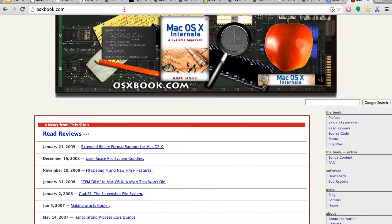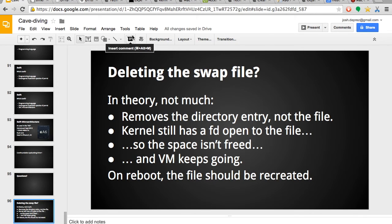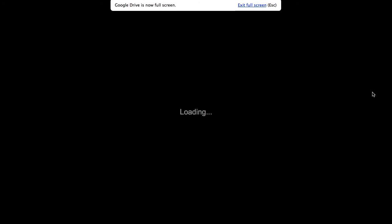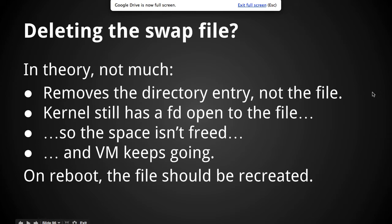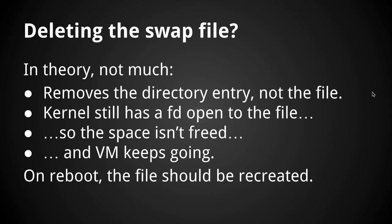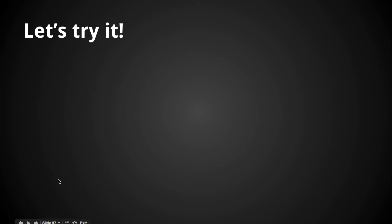One thing I vaguely hinted at in my abstract: what happens if you delete the swap file on a running system? Well, if you do it with rm, not much — it just deletes the directory entry. The kernel still has a file descriptor to it, so you haven't stopped the kernel running. The space isn't freed because the kernel still owns it. The virtual memory system keeps going, nothing happens, and when you reboot, it just comes back. So given that's the theory, let's try it — I'm going to do it in a VM on my laptop. Yesterday I installed macOS 10.9 in VMware and found the virtual memory file.